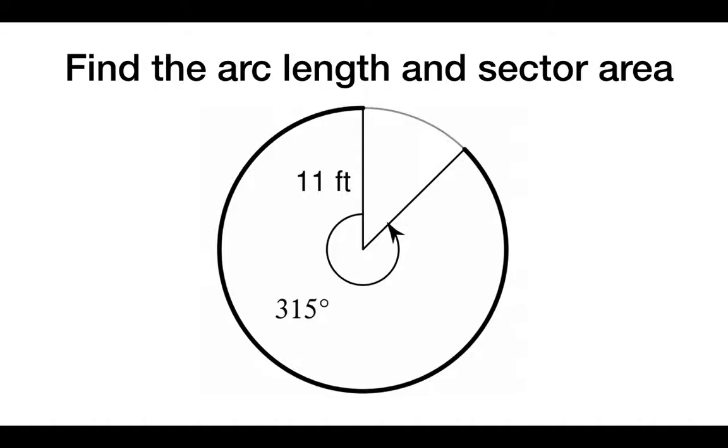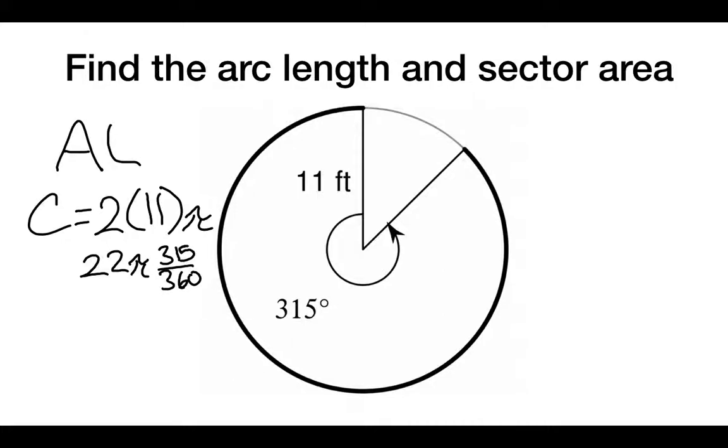So here, let's try a couple of them. So what we're going to do right here is we're going to find the arc length and sector area of this example problem. So for arc length, what we end up doing is we take our circumference, which is, once again, 2 times the radius times pi. That's 22 pi. And we multiply it, in this case, by 315 over 360. Now you'll notice that's most of it. So what we end up getting here is 19.5 pi feet.